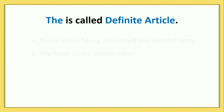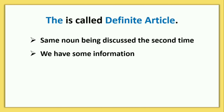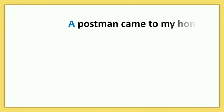THE is called the definite article। THE तब use होता है — the same noun being discussed the second time। जिस noun के बारे में पहले discussion हो चुकी हो और हम दुबारा उसी के बारे में बात करें, तो उसे specify करने के लिए THE use होता है। अगर हमारे पास कोई information है, तब भी THE article use किया जाता है।